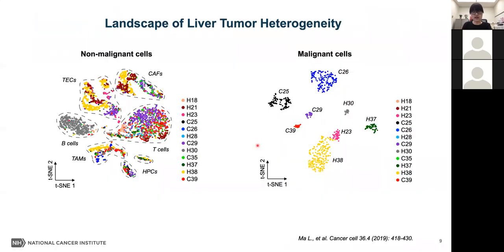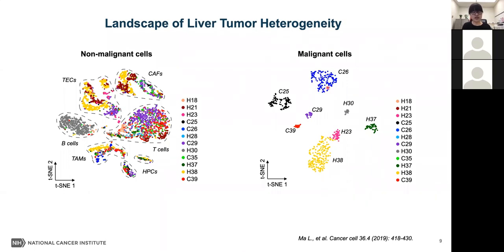With the derived single cells, we separated malignant cells and non-malignant cells by inferring copy number variations from the transcriptome. Non-malignant cells were mainly grouped according to their cell types, annotated using cell lineage-specific marker genes as T cells, B cells, macrophages, endothelial cells, fibroblasts, and hematopoietic progenitor cells. In contrast, malignant cells formed patient-specific clusters indicating inter-tumor heterogeneity. Tumor cells within a single tumor also differ in their transcriptomic profiles, showing evidence of intra-tumor heterogeneity.